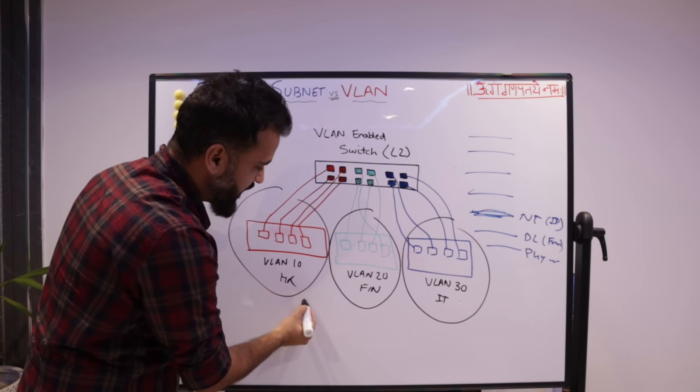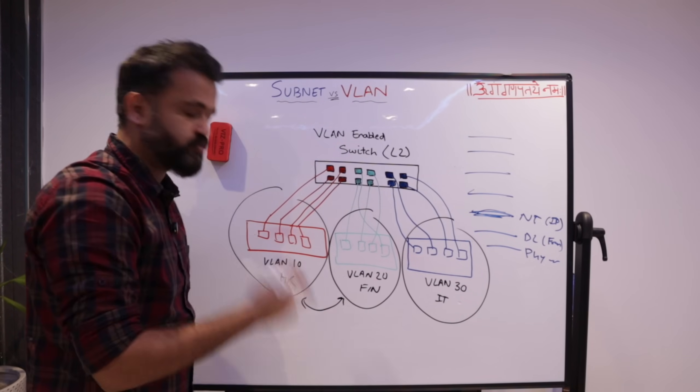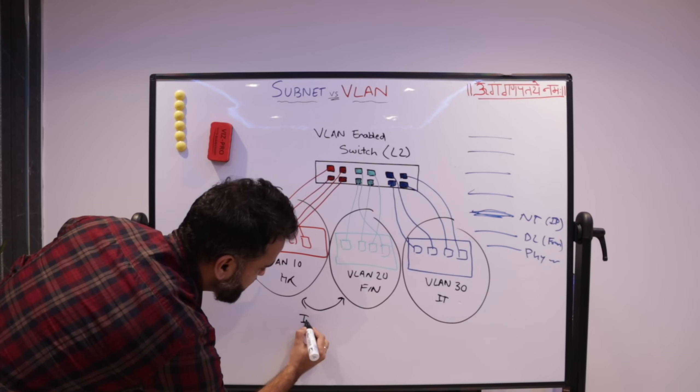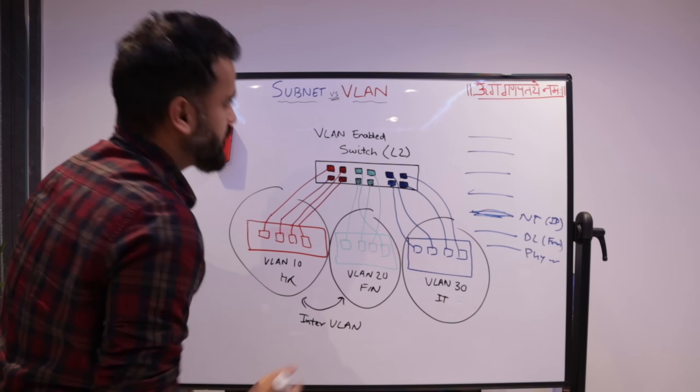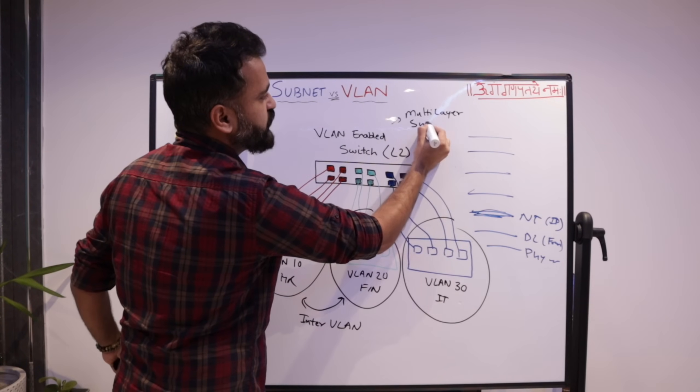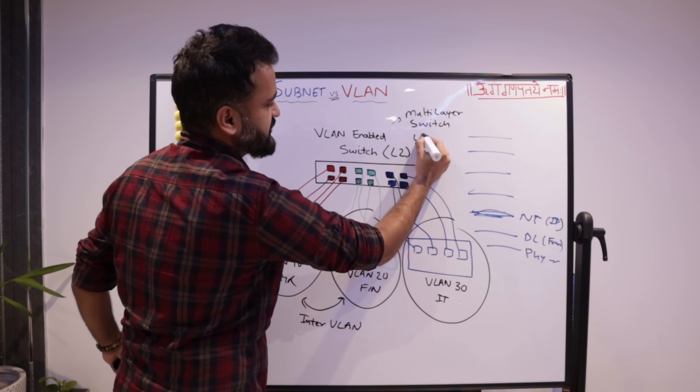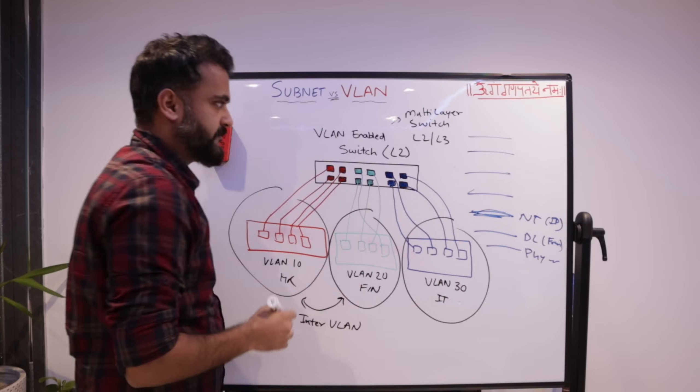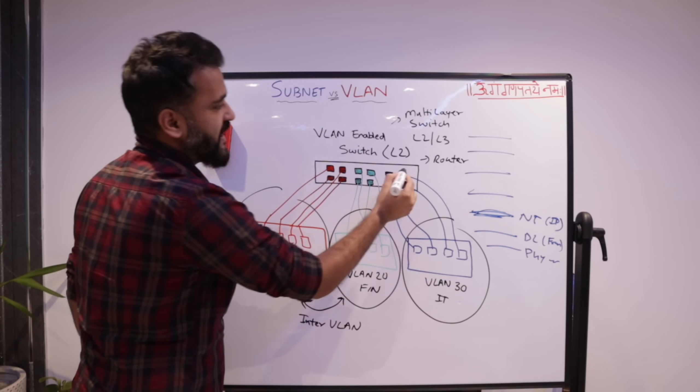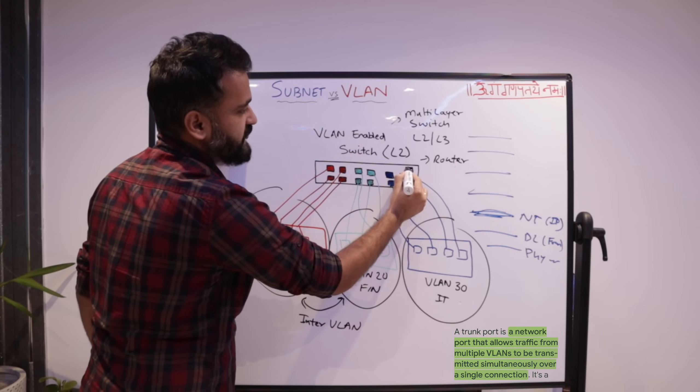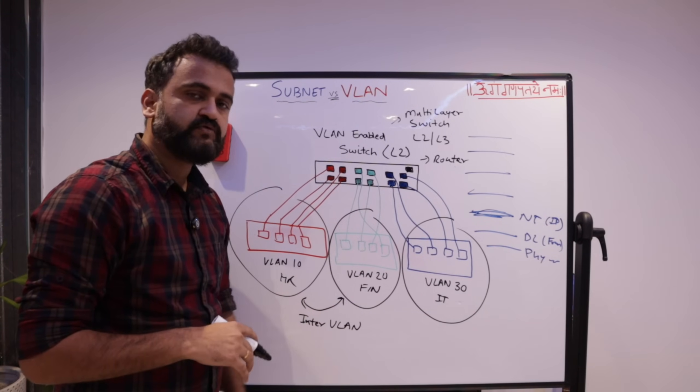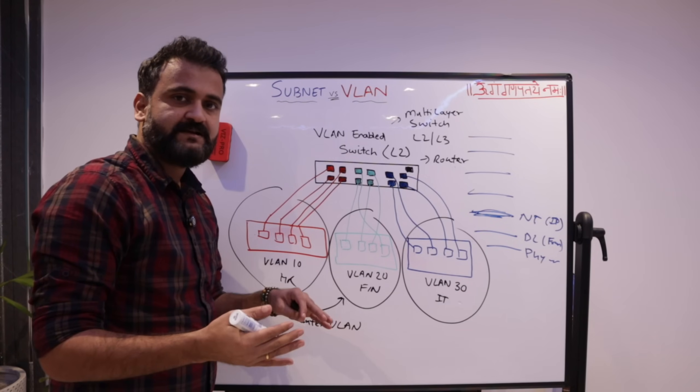Now a natural question comes that what happens if VLAN 10 and VLAN 20 want to talk to each other. Now this comes under inter-VLAN communication. So for inter-VLAN communication, layer two switch alone will not be sufficient. Either you will need to have a multi-layer switch, which works at multiple levels. So it will work at layer two and layer three as well. Or you will need a router to enable it. Generally what happens that you would have a trunking port here, which will enable a router to get connected and then it will have the inter-VLAN communication using a switch.